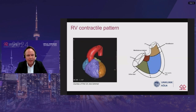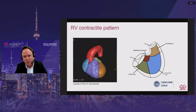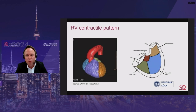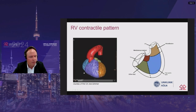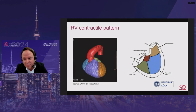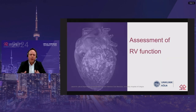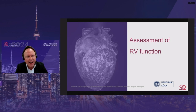Adding further complexity, the typical contraction of the right ventricle is a sequence starting with the inflow tract, proceeding with the apical portion, and ending with the contraction of the outflow tract, with a delay of about 25 to 50 milliseconds. So right ventricular contraction seems to be a complex sequence — and how is this assessed by conventional echocardiography?